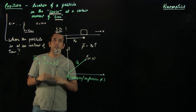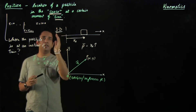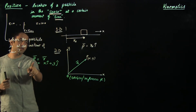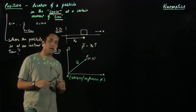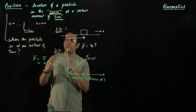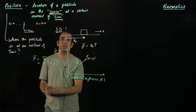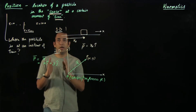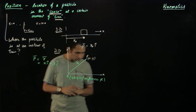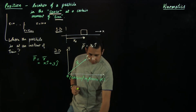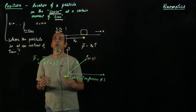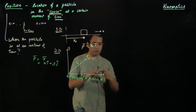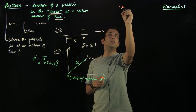One important thing: position is defined at a certain instant of time. So whenever we encounter a question asking for the position of a particle at t = 5 seconds or t = 4 seconds, we are specifically finding the position at that instant. Going ahead, the second quantity used a lot to define the motion of a particle is displacement.